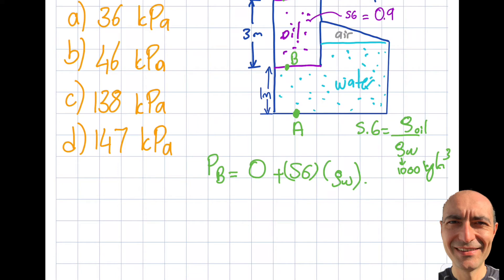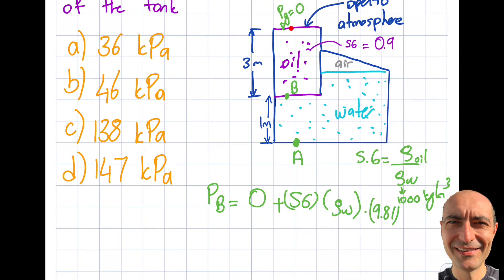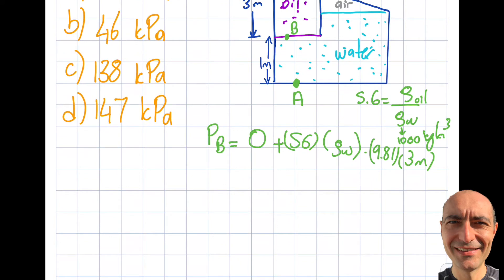So far I have density, gravity is 9.81, and the height I travel between the free surface and point B is 3 meters. So PB is 0.9 × 1000 × 3 × 9.81. That's 900 × 3 = 2700 × 9.81.